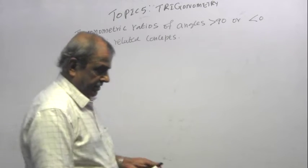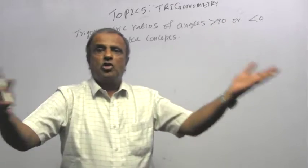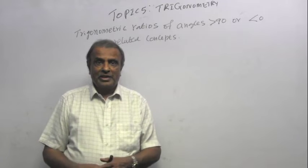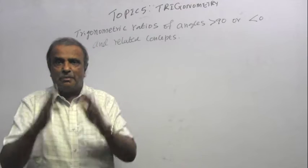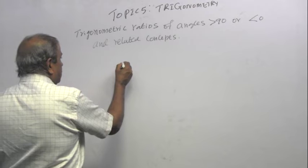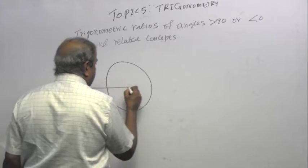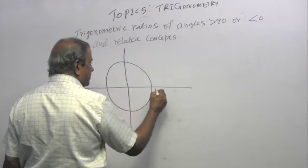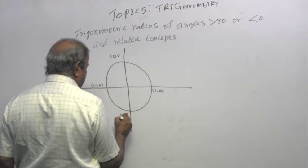To understand this, we need to go back a bit. I want to move beyond the SOHCAHTOA approach — not that SOHCAHTOA is wrong — but I want to broaden our horizon instead of being limited to the right-angle triangle. You all know the unit circle: circle, centre (0, 0), radius 1. The point (1, 0) is here, (0, 1) is here, (−1, 0) is here, and (0, −1) is here.